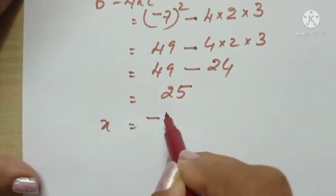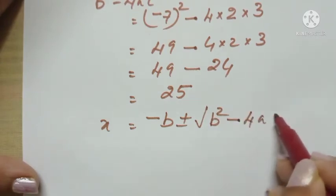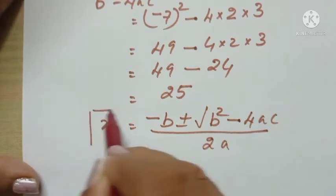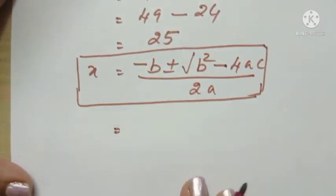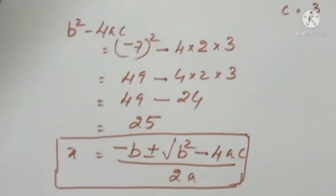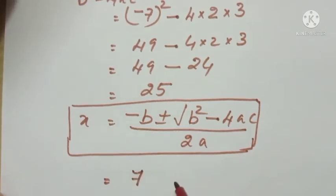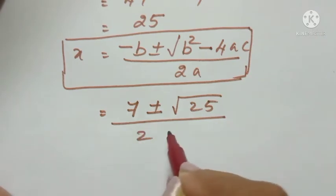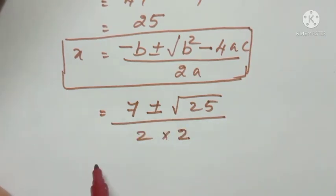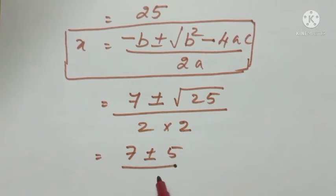Applying the quadratic formula: x = (-b ± √(b² - 4ac)) / 2a. Here, b is -7, so minus b equals 7. Therefore x = (7 ± √25) / (2 × 2), which gives (7 ± 5) / 4.